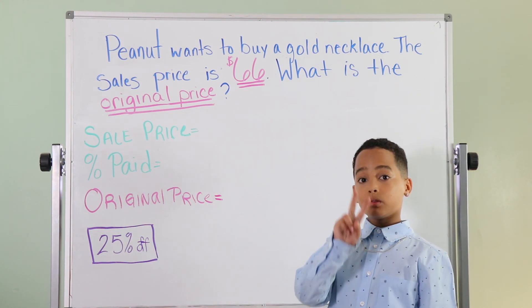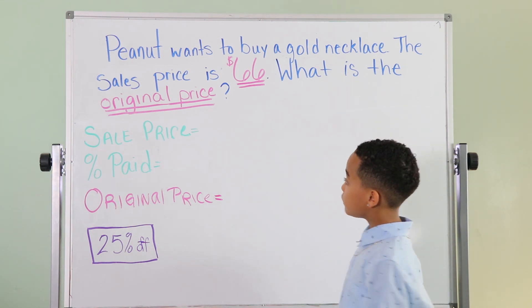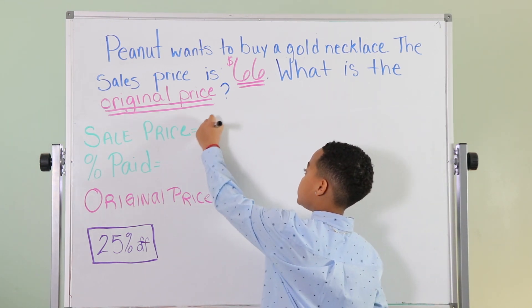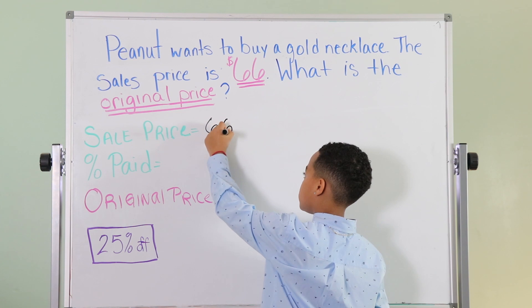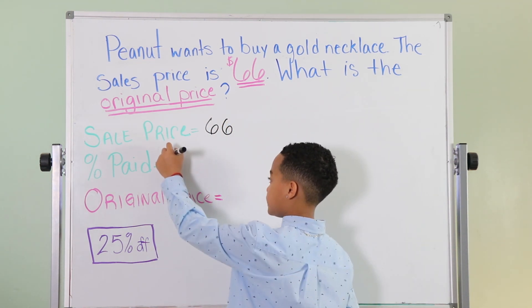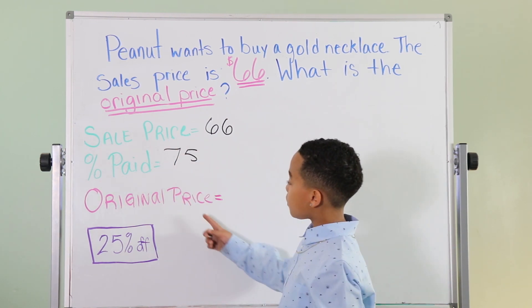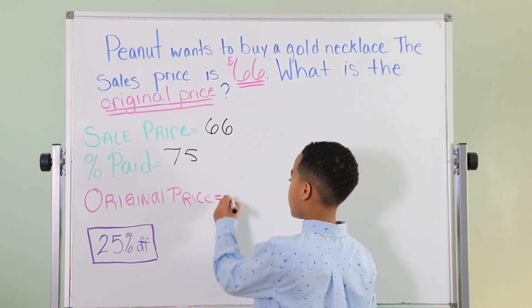Now we know two things, the sales price and the percent paid. The sales price is $66. The percent paid is 100 minus 25%, that's 75. And we're going to write a variable for the original price, P.